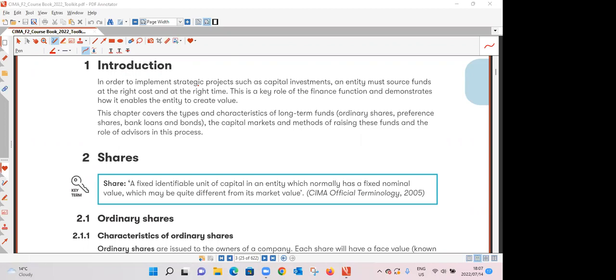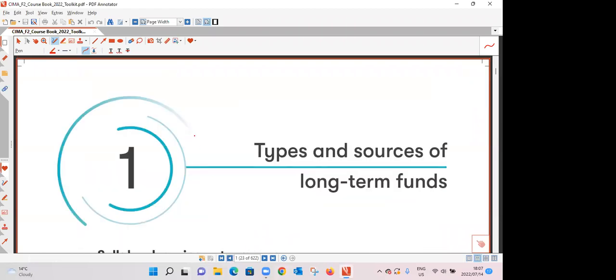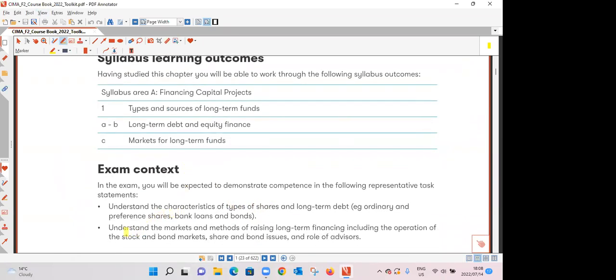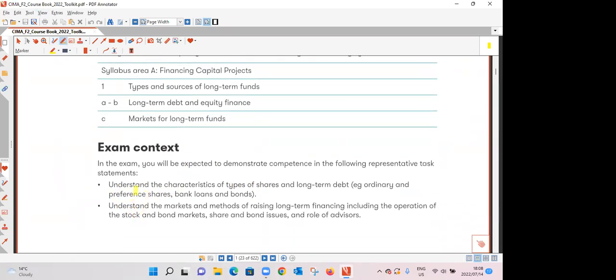So as we will be navigating through chapter one you ought to be asking yourself what is examinable so that you don't waste your time on things that are not examinable. CIMA has made the exam very easy by giving us the exam blueprint so as we start each and every chapter you will know exactly what you are expected to demonstrate your competence in.